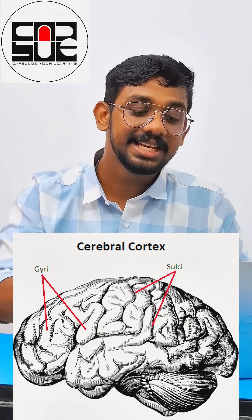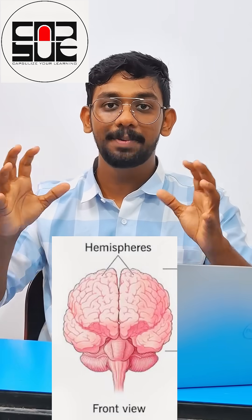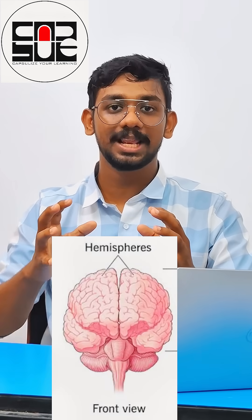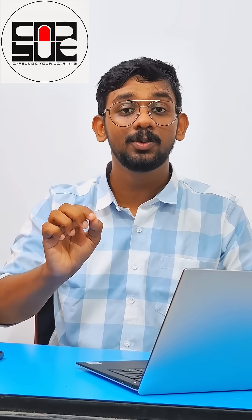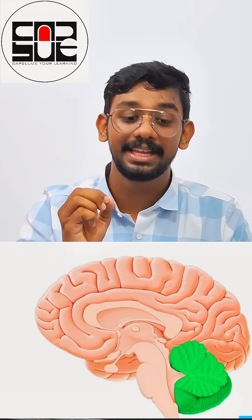Coming to the structure of your brain, the major portion constitutes the cortex — the cerebral cortex. It is constituted by 2 cerebral hemispheres. The cerebrum is the wrinkled part of the brain which controls the higher mental functions like thinking as well as speech. Also, the cerebellum — it is a little brain which is responsible for balance and coordination.